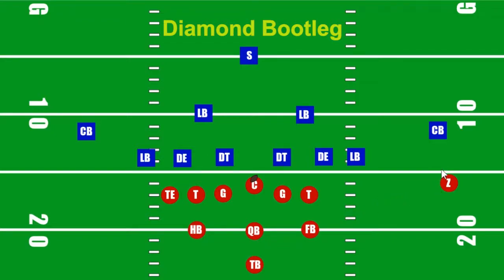The pass patterns: Z does a corner out — inside, out. The tight end is going to be dragging across the middle. A lot of times he will be wide open. I don't know why, because he passes right in front of the vision of everybody that's supposed to be playing secondary, but tight ends have a tendency of being able to drag right across and be wide open.